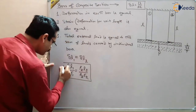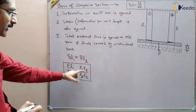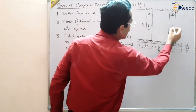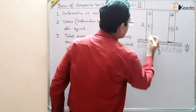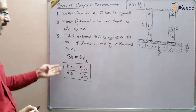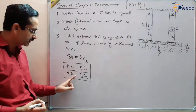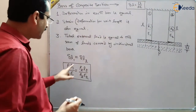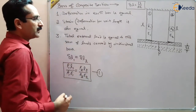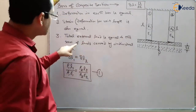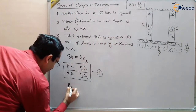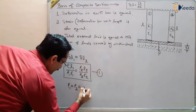In this equation, L1, L2, A1, A2, E1, and E2 are all given. The unknowns are P1 and P2, so two equations are required. The first equation is P1*L1/(A1*E1) = P2*L2/(A2*E2). The second equation is the load equilibrium: P1 + P2 = P. Using these two equations together, we can solve for P1 and P2.